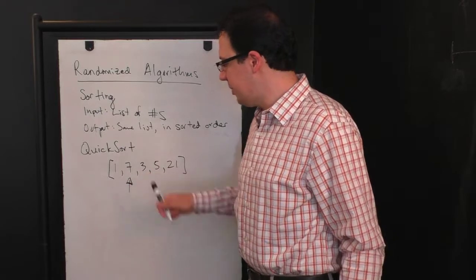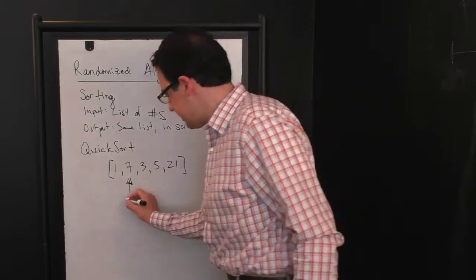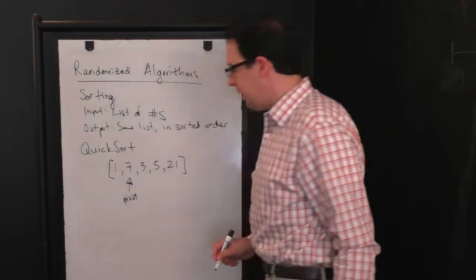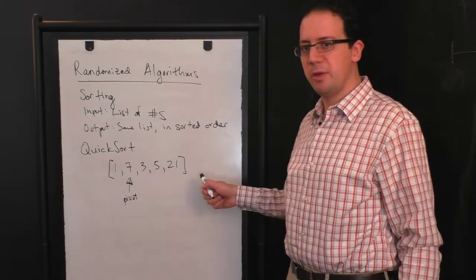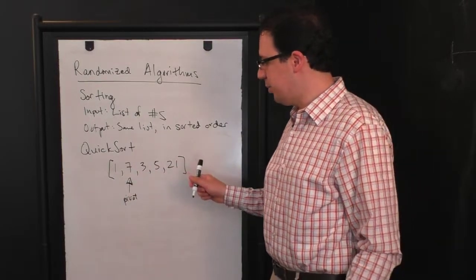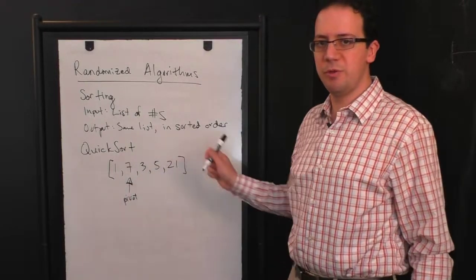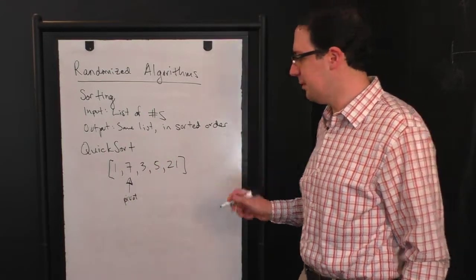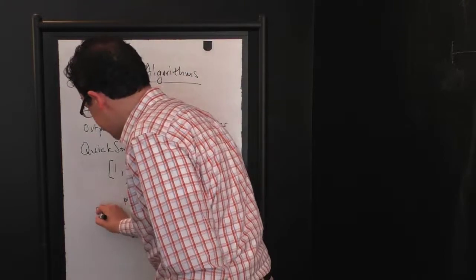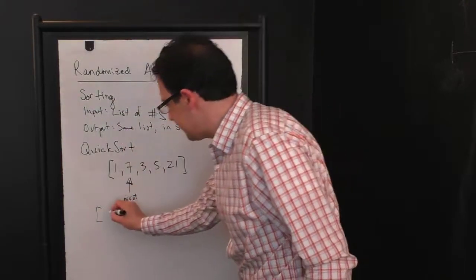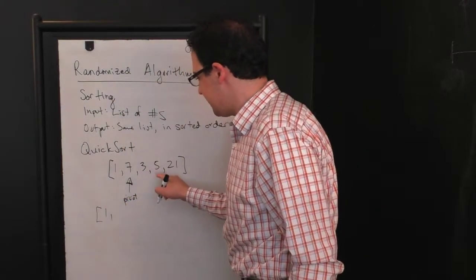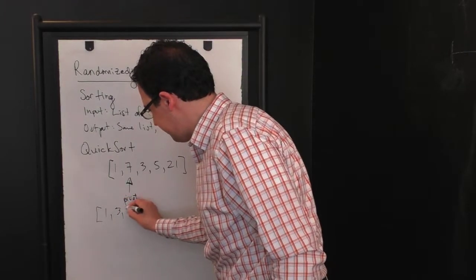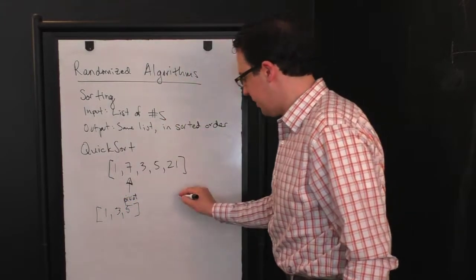So Quicksort randomly picks from a list and calls this the pivot. And then what it does is it scans through the list, and it's going to put all of the other numbers in one of two buckets, depending on whether they're less than the pivot or greater than the pivot. So in this case, we scan through: one is less than the pivot, three is less than the pivot, five is less than the pivot, and 21 is greater than the pivot.